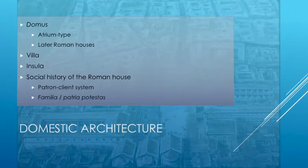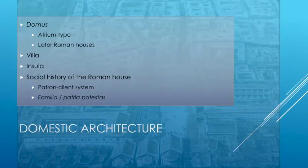The social history of the Roman house is very important, which brings us back to the form and function concept. The patron-client system, as we have read, is operative in the Republican and early imperial periods, whereby patrons provide political, financial, and social support for their clients. The house becomes the center of the patron-client system, as it is in the atrium of the Domus that the patron would receive his clientage.